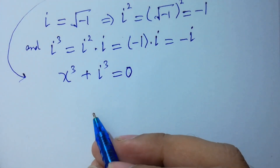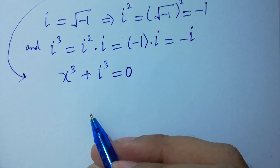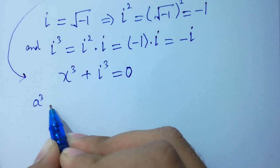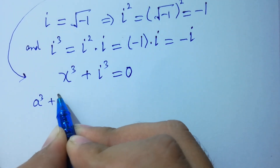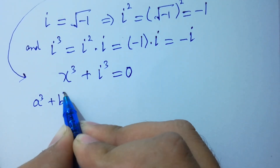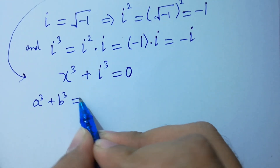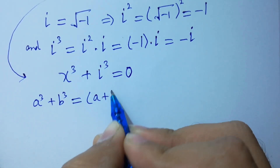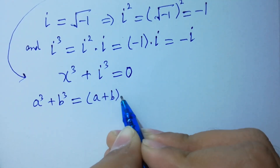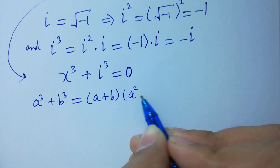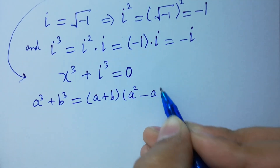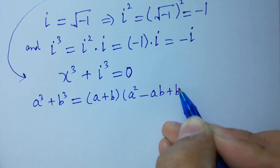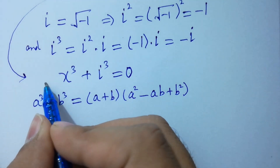As we know, the sum of cubes formula states: a³ + b³ = (a + b)(a² - ab + b²).